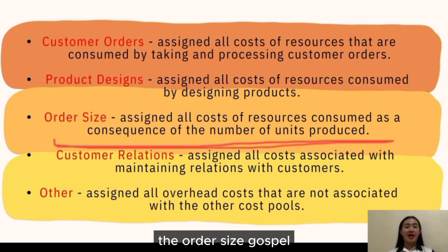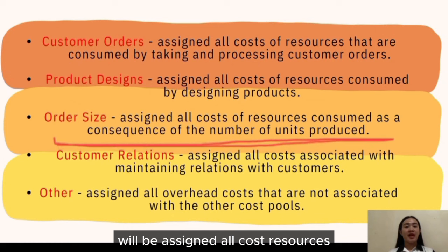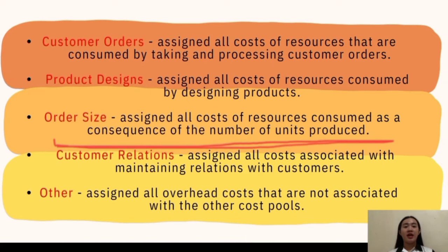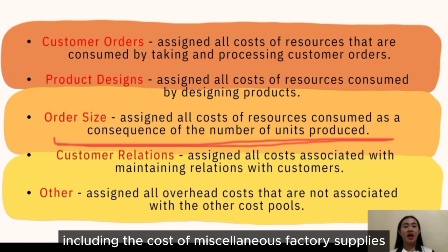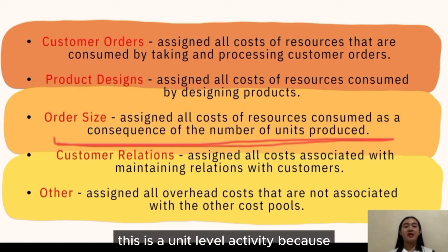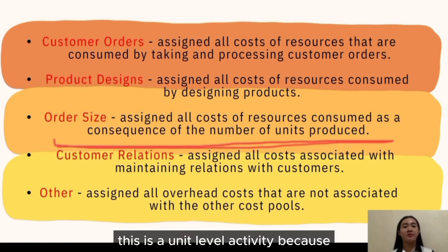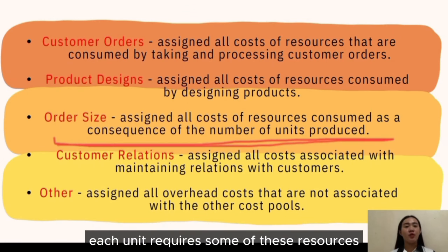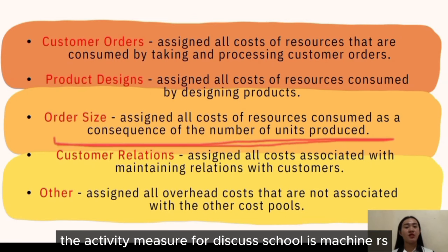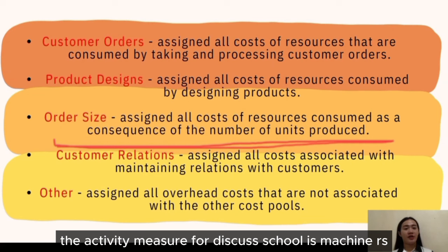The order-size cost pool is assigned all costs and resources consumed as a consequence of units produced, including the cost of miscellaneous factory supplies, power to run machines, and some equipment depreciation. This is a unit-level activity because each unit requires some of these resources. The activity measure for this cost pool is machine hours.